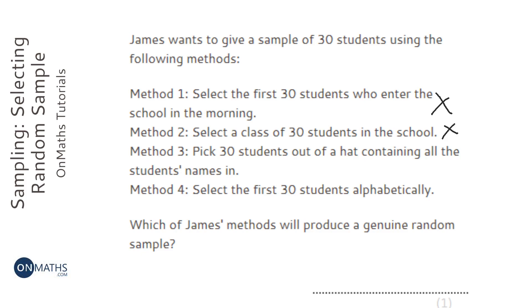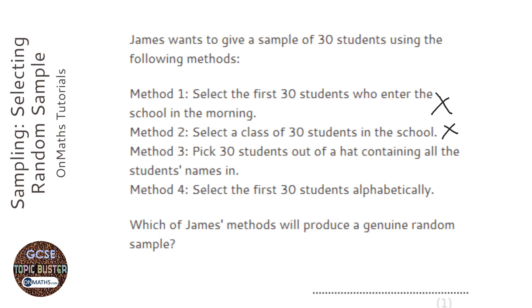Method four: select the first 30 students alphabetically. That is quite random, but everyone in the population needs an equal chance of being picked. If you had a name beginning with Z, then you wouldn't have an equal chance of being picked. So that's not a great one.